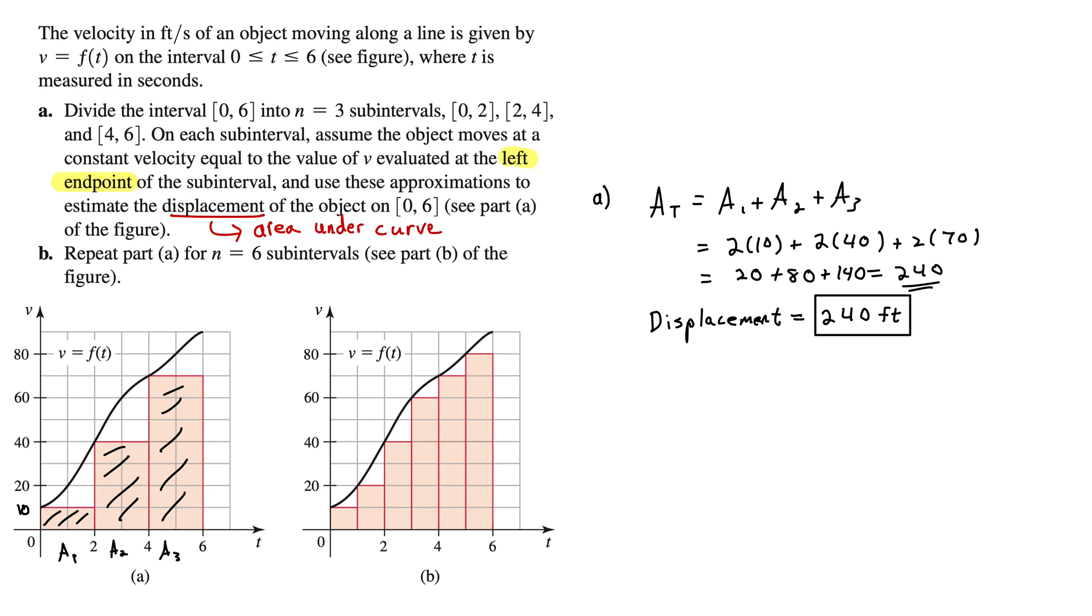On to part B. It says repeat part A for n equals 6 subintervals. So now we have the same curve, but now we have 6 rectangles below it. Now we have our total area is equal to the sum of the areas of those 6 rectangles created under the curve here.